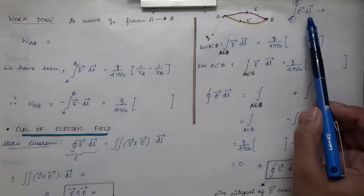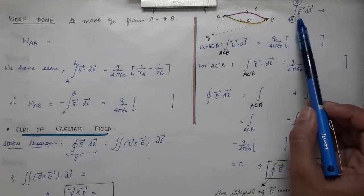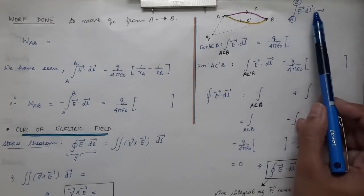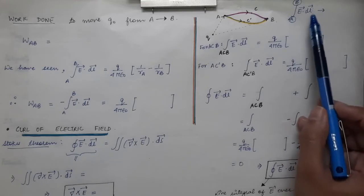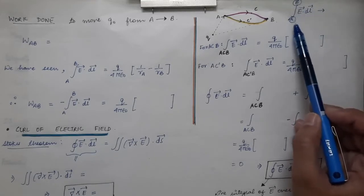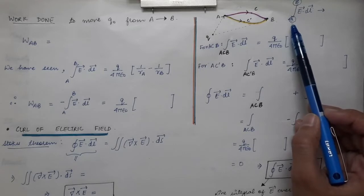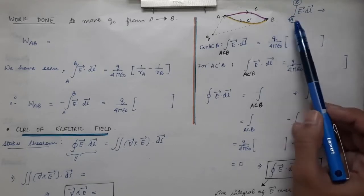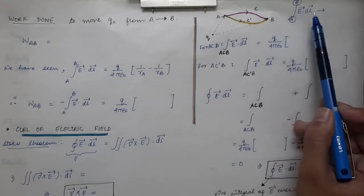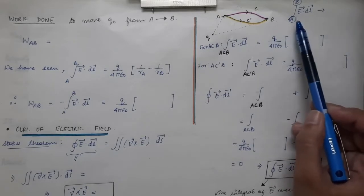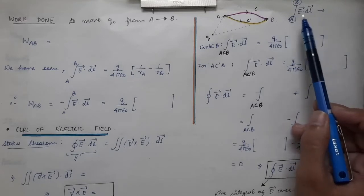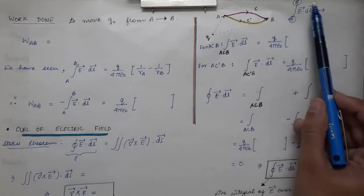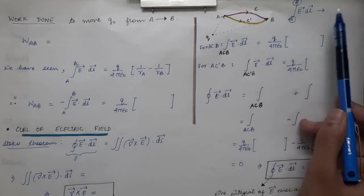In the previous lecture, we discussed the line integral of electric field from an initial point to a final point B. We saw that the line integral depends only upon the position vectors of the initial and final points — it does not depend upon the path chosen. No matter what path you choose, as long as the initial and final points are the same, the line integral of electric field will remain the same.